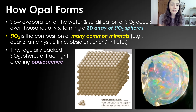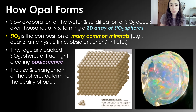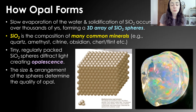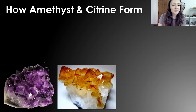The tiny, regularly packed silica spheres diffract light, creating opalescence. Opalescence is the term for the shine that opal gives off, and the size and arrangement of the spheres determines the quality and shimmeriness of the opal.